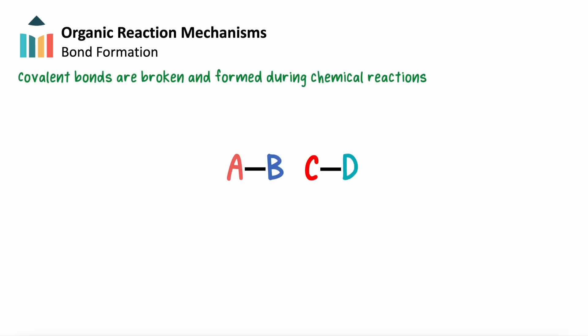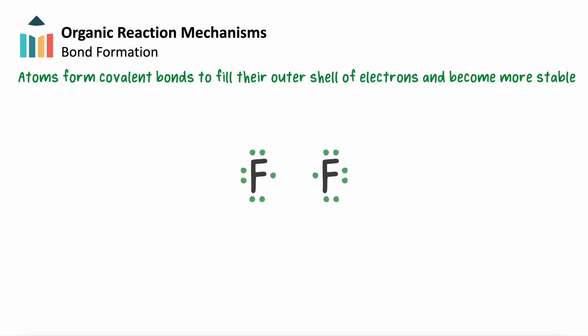Covalent bonds are broken and formed during chemical reactions. Atoms will form covalent bonds to try and fill their outer shell of electrons and become more stable. They do this by sharing a pair of electrons between them.